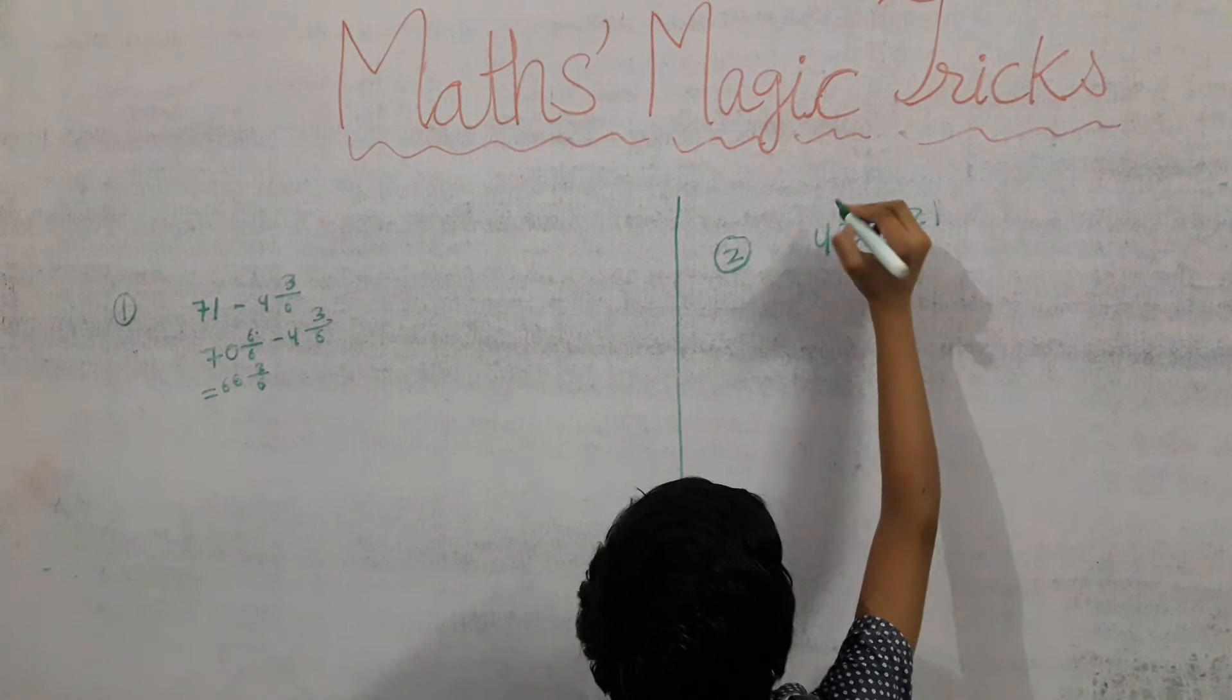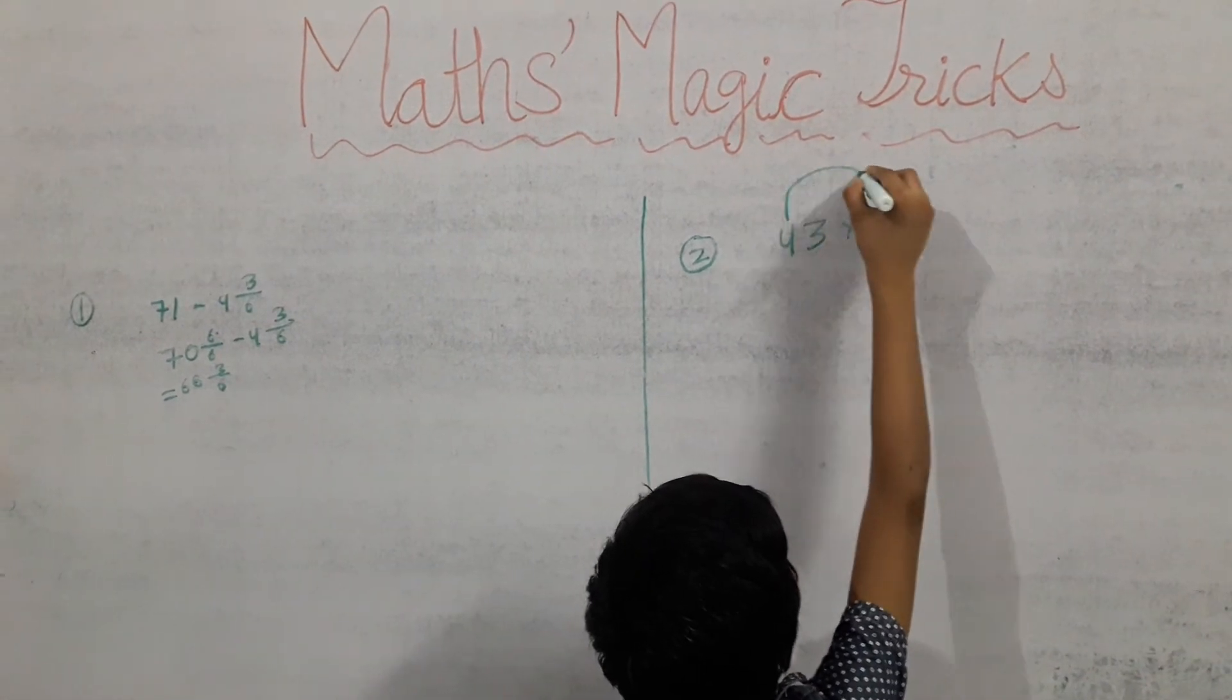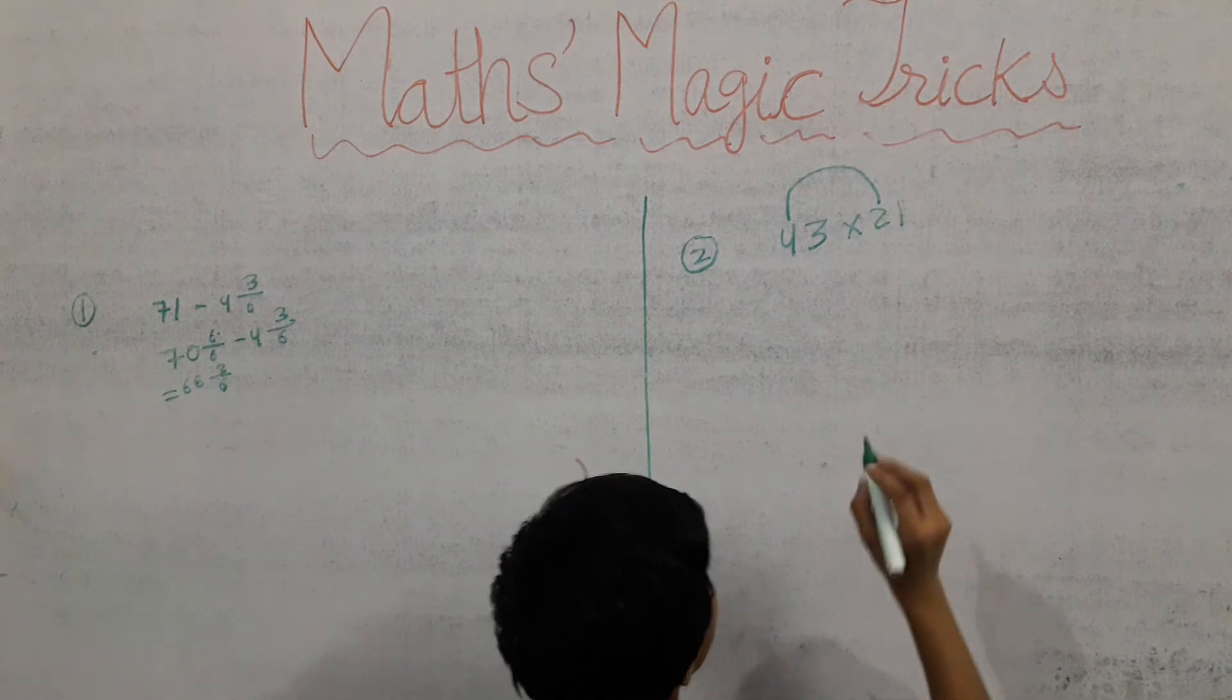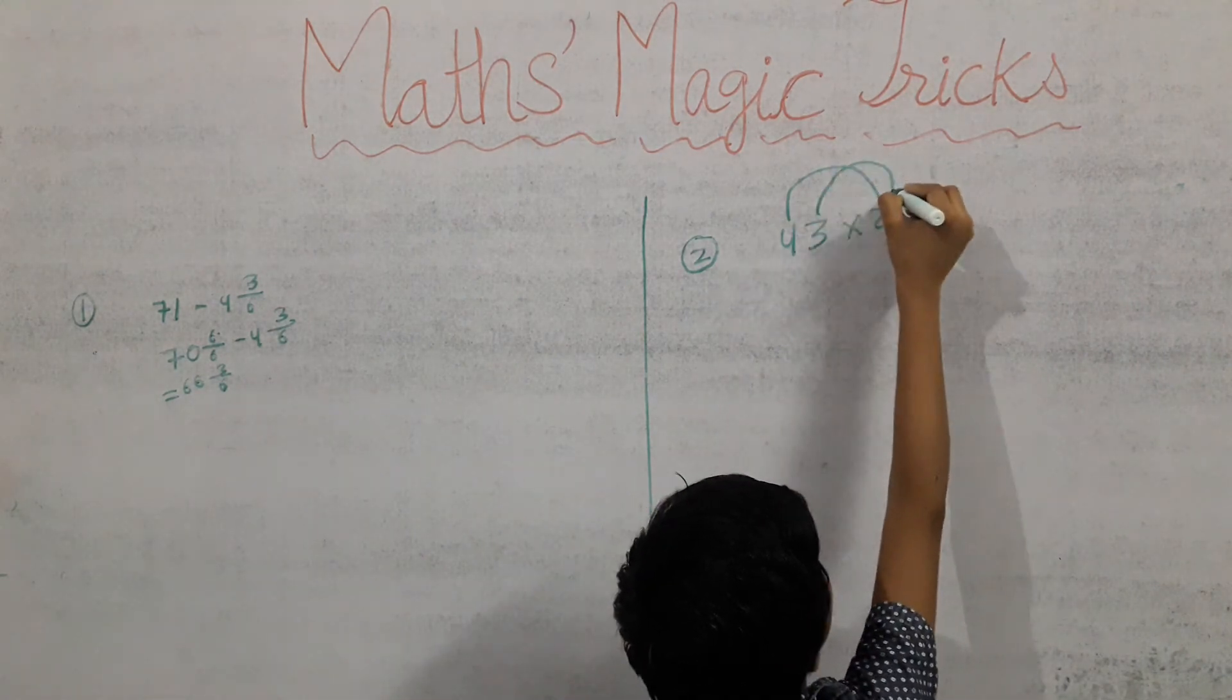Now we have to multiply four with the second first unit two, and three with the second.